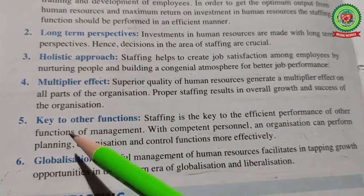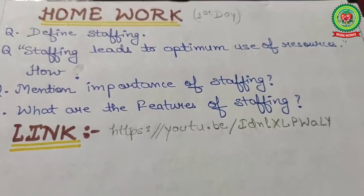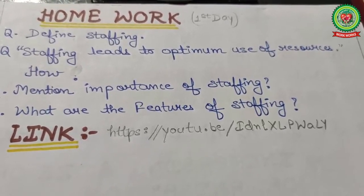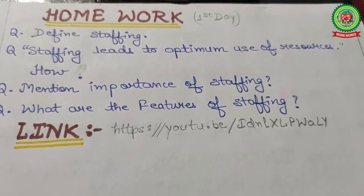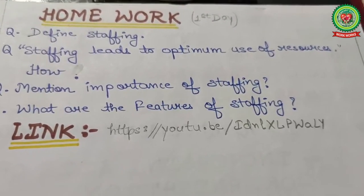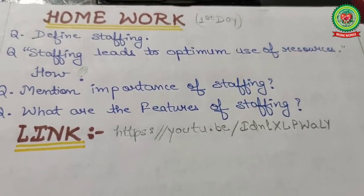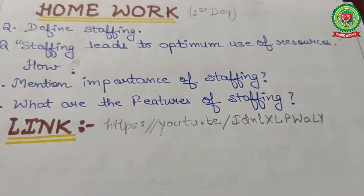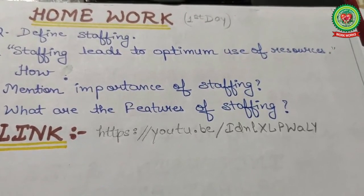These are the importance points of staffing: huge investment, long-term perspective, holistic approach, multiplier effect, key to other functions, and globalization. Now for your homework, note down these questions: One - define staffing. Two - how does staffing lead to optimum use of resources? Three - mention the importance of staffing. Four - what are the features of staffing? Research these questions using different books, the internet, school links, and YouTube links for better understanding. Thank you so much.